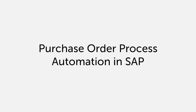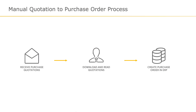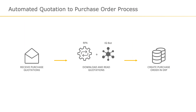The creation of a purchase order in an ERP system from a quotation is a very common process that occurs in almost every enterprise. The quote data is manually entered into the enterprise's purchase order generation system. This video demonstrates how Automation Anywhere automates this process with ease using IQBot Intelligent Document Processing in conjunction with RPA.